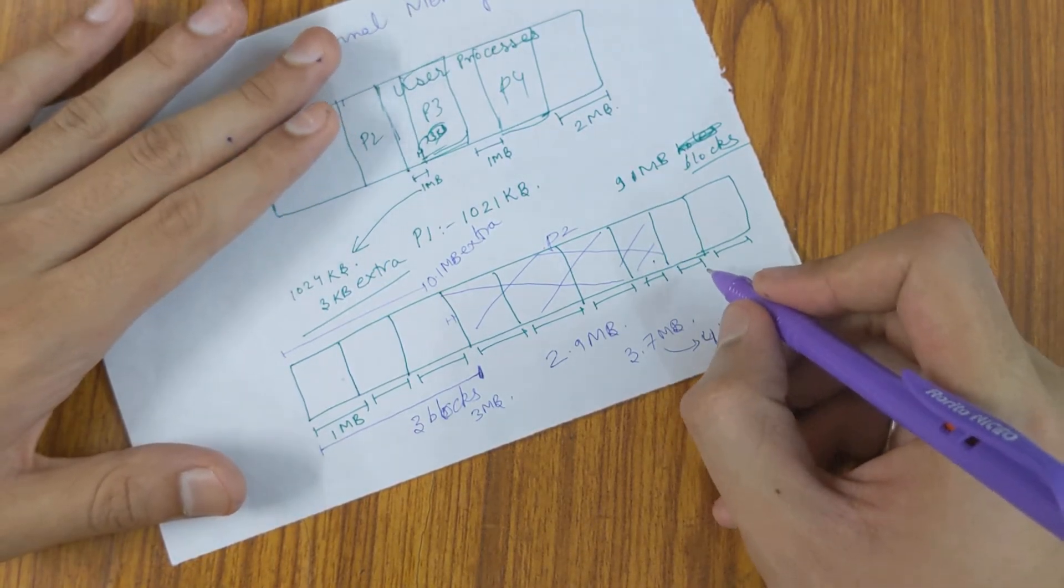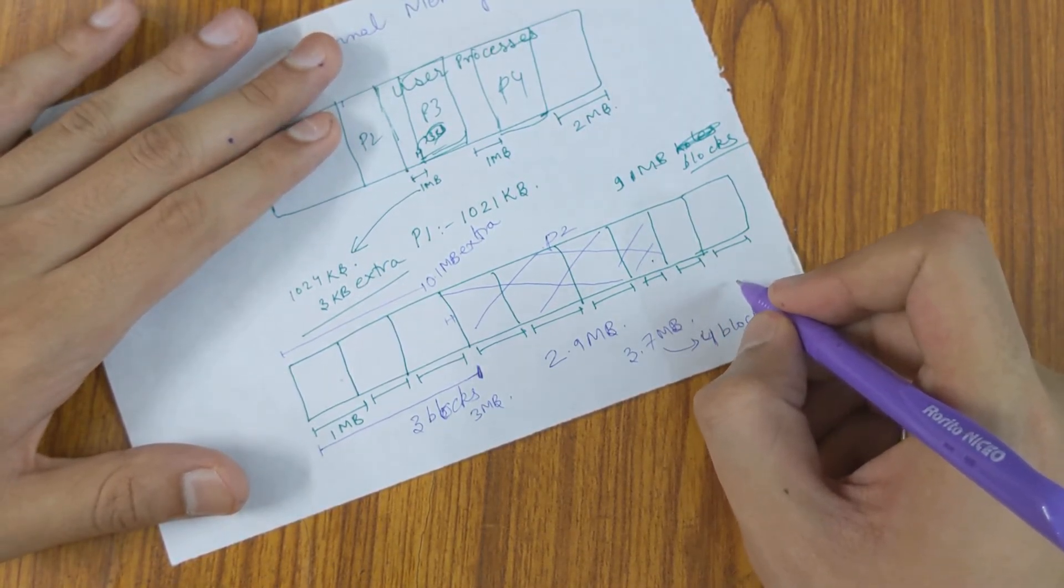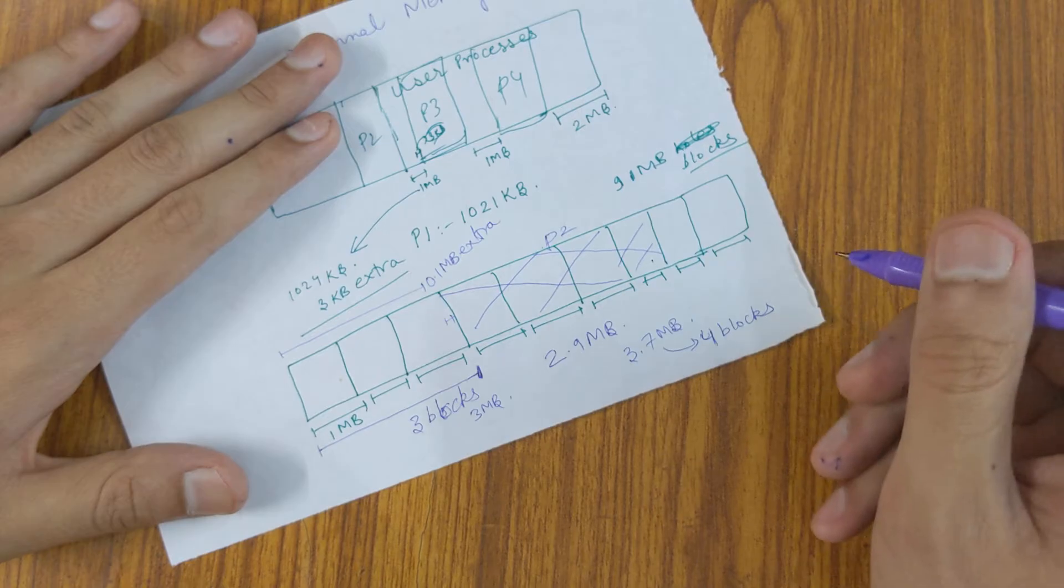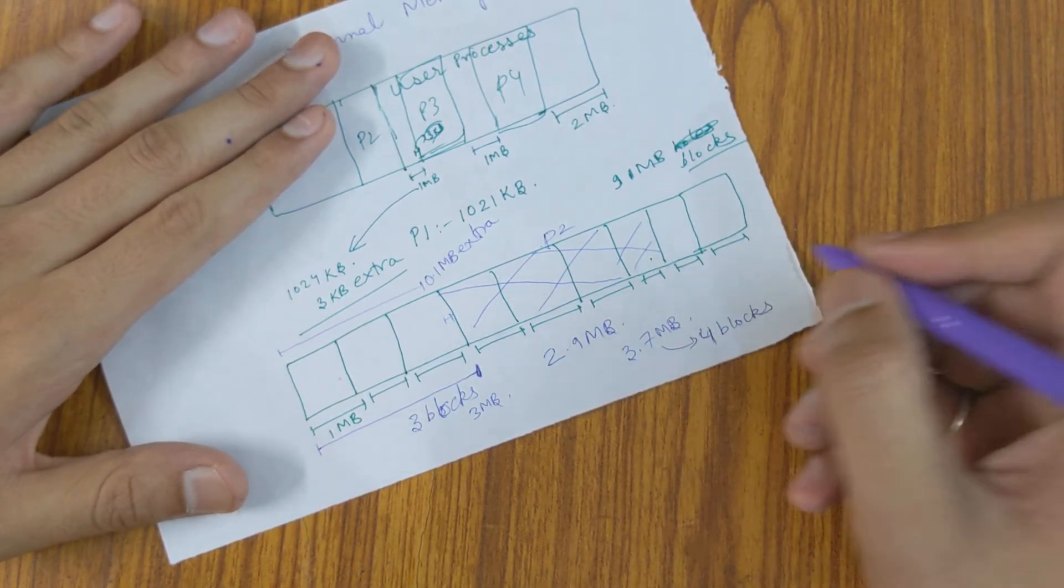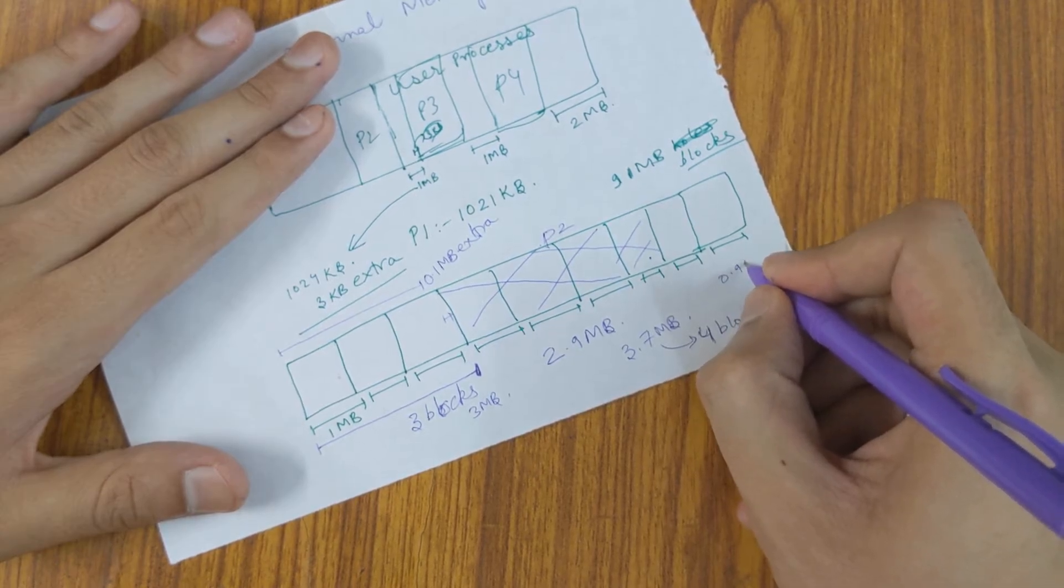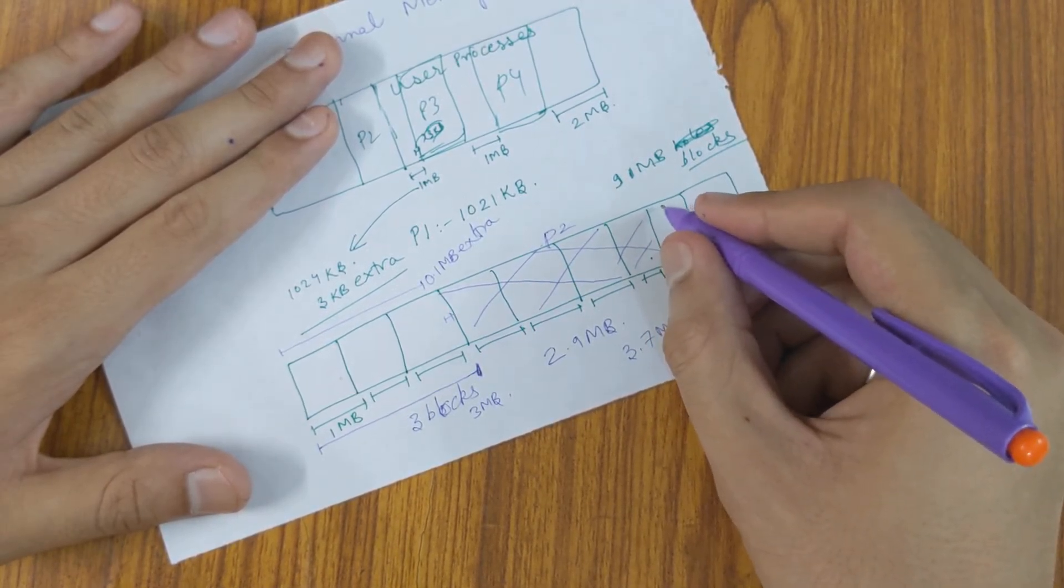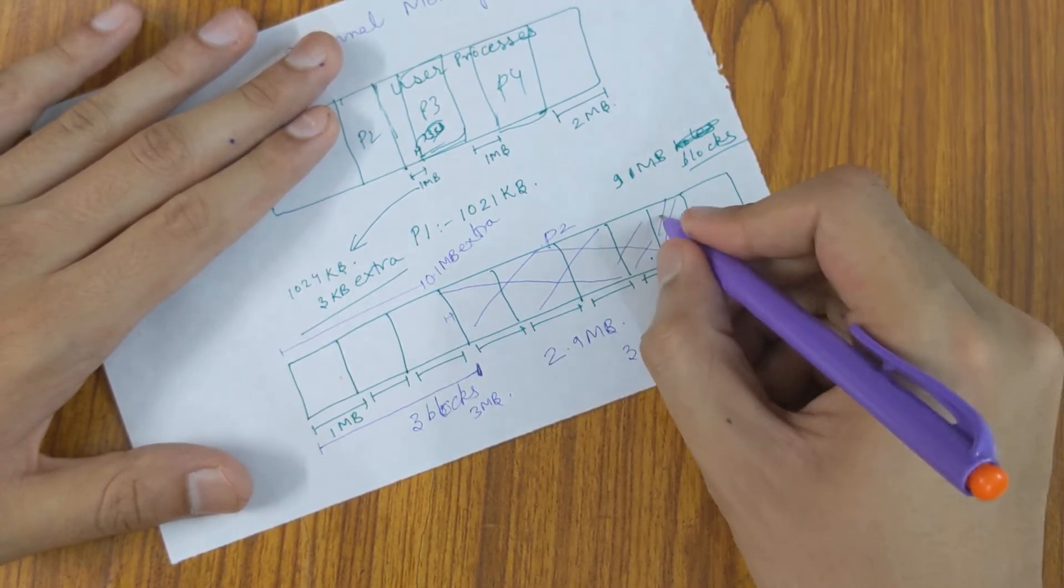Now, one more process comes with a requirement of let's say 0.9 MB. Then we allocate 1 block to it. So, P3 will be allocated 1 block.